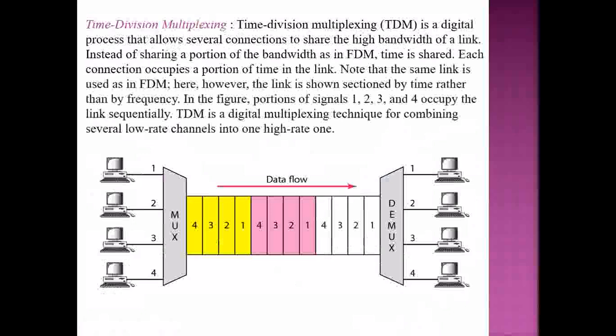Time division multiplexing (TDM) is a digital process that allows several connections to share the high bandwidth of a link. Unlike FDM where a portion of bandwidth is shared, in TDM what is shared is time. Each connection occupies a portion of time in the link. The same link is used as in FDM, but the link is sectioned by time rather than by frequency.